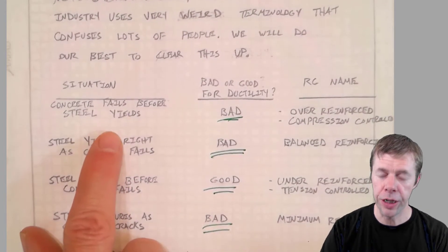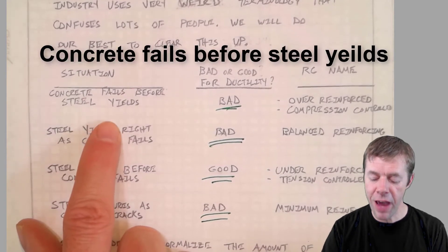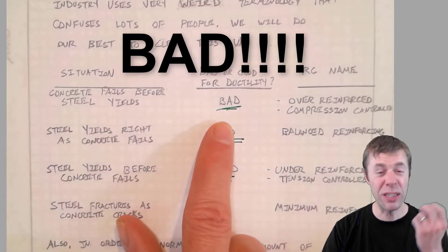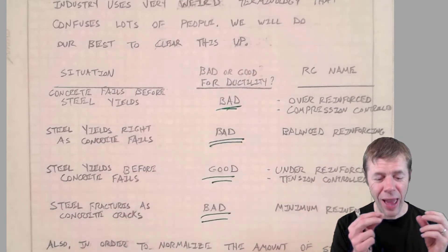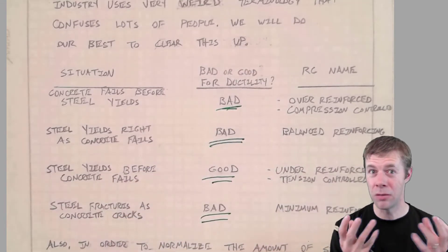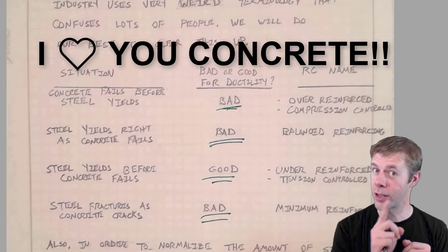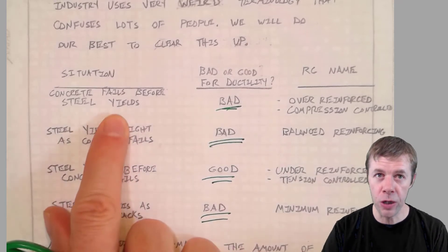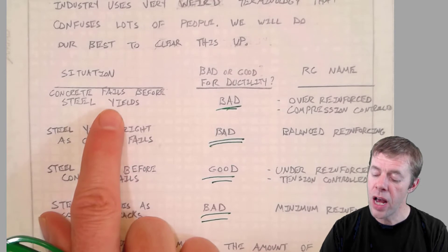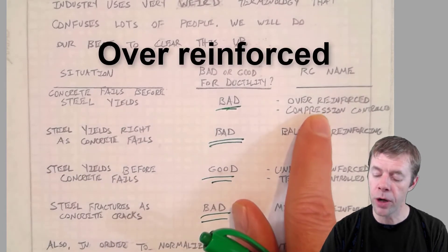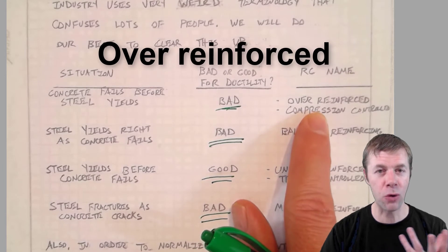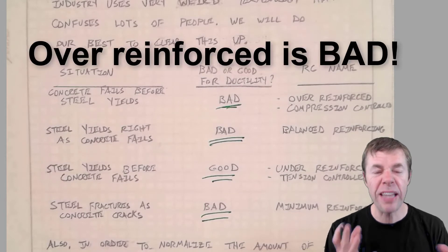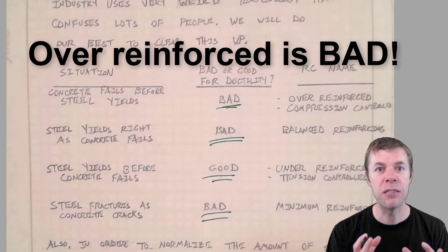So we've got a couple situations down here. One of them is that the concrete is going to fail before the steel yields and that is actually bad for ductility. Steel is ductile. Steel can bend and flex and stretch. Concrete just kind of explodes and crushes. That's okay. There's lots of other good things about concrete but that's one of the benefits of using them together. We want the steel to yield before the concrete is going to crush. This is called over-reinforced or compression controlled. Over-reinforced. Doesn't that sound good? Doesn't that sound like a good thing? It's not. It's awful. It's scary. You don't want it. It's bad.